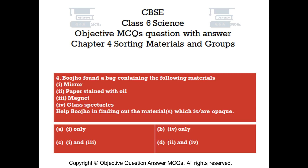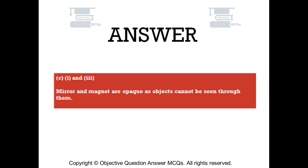Question number 4. Bullho found a bag containing the following materials: 1. Mirror, 2. Paper stained with oil, 3. Magnet, 4. Glass spectacles. Help Bullho in finding out the material(s) which is/are opaque. Option A: 1 only. Option B: 4 only. Option C: 1 and 3. Option D: 2 and 4. The right answer is Option C — 1 and 3. Mirror and magnet are opaque as objects cannot be seen through them.